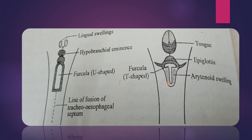First the cricoid cartilage is present as two parts. Then further development occurs — the two sides unite each other and it forms a signet-shaped structure, becoming a single cricoid cartilage. The arytenoid swelling differentiates into a pair of arytenoid cartilage and corniculate cartilage. The hypobronchial eminence differentiates into the epiglottis, and a detached part from the epiglottis is going to form the cuneiform cartilage.